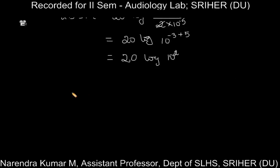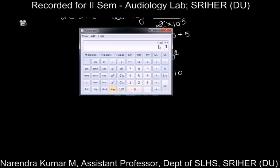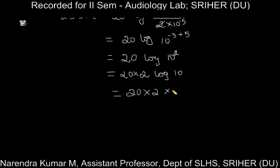On further simplification, the exponential value 2 comes in front of the log, giving 20 × 2 × log(10). We know the value of log₁₀(10) is 1. Hence the equation becomes 20 × 2 × 1 = 40 decibels. So the absolute sound pressure has been successfully converted into decibel sound pressure level.